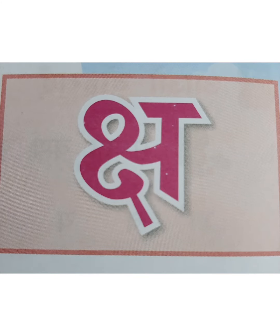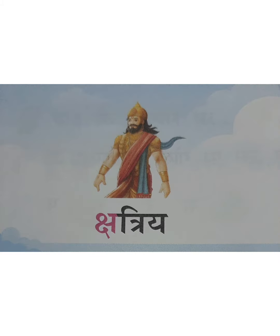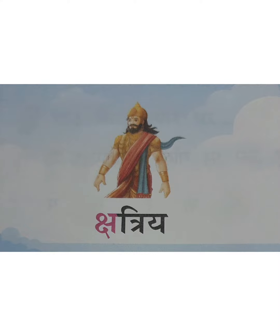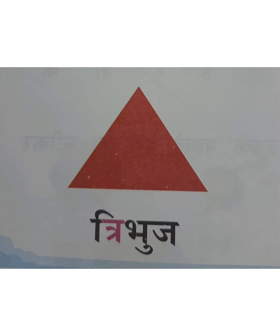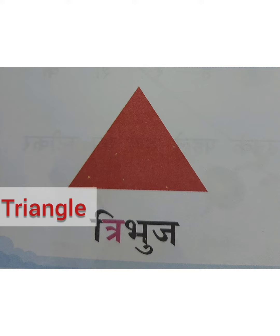KSHA — KSHATRIA. KSHATRIA means warrior, a ruler or a soldier. TRA — TRABUJ. TRABUJ means triangle, one geometrical shape with three sides.